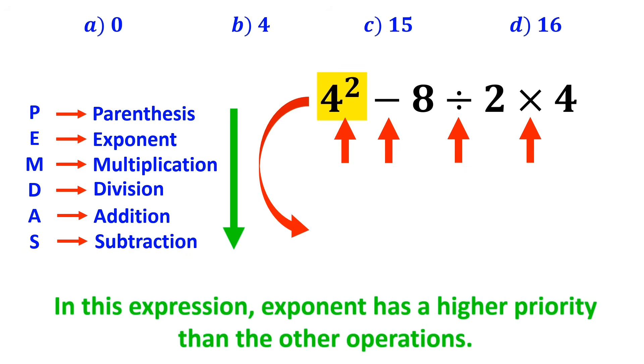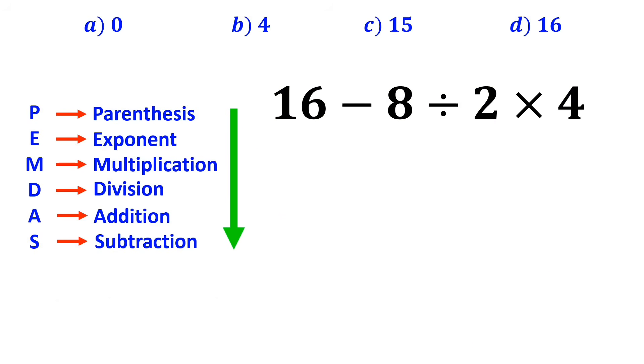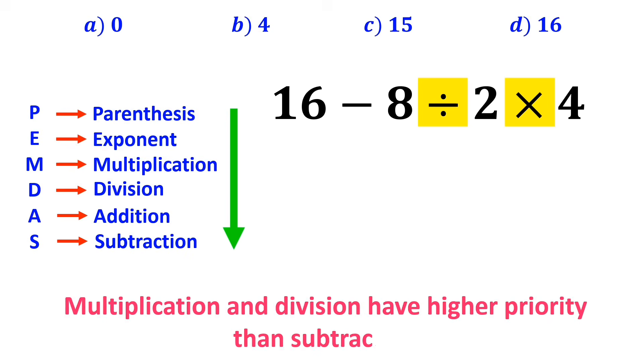So, this expression simplifies to 16 minus 8 divided by 2 times 4. In the next step, we need to handle the division and multiplication, since multiplication and division have higher priority than subtraction.